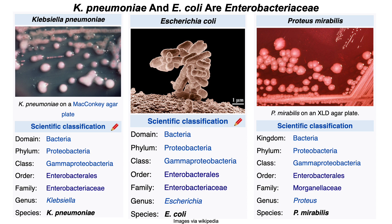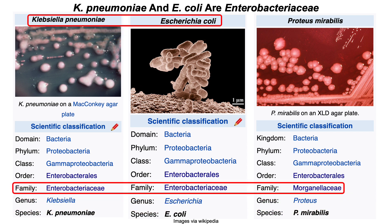Klebsiella pneumoniae and E. coli are enterobacteria — bacterial species in the enterobacteriaceae family. As for Proteus mirabilis, the family is not currently classified as enterobacteria, but they were previously classified as such. At the time of publication, Proteus mirabilis were classified as enterobacteria, but that family was subsequently reclassified to Morganellaceae — a sister family closely related to enterobacteria.